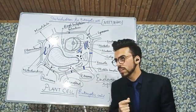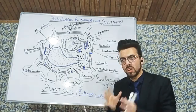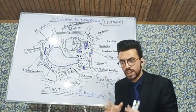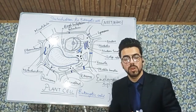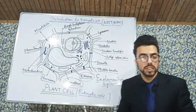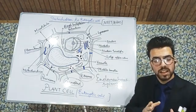Thirdly, there is what we call the Elioplast. Elioplast is meant for the storage of oils, for the storage of fats. So this was about the plastids, a brief glimpse about them. Then we move on to the next thing, that is what we call Cilia and Flagella.